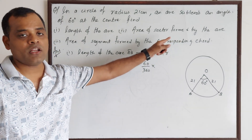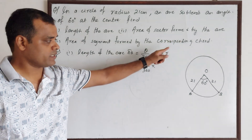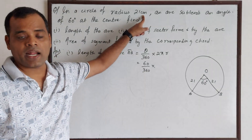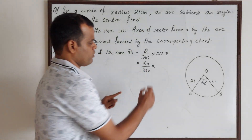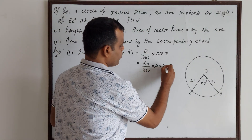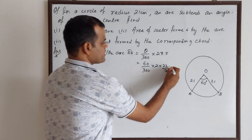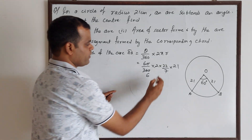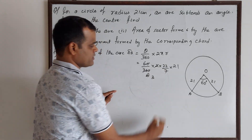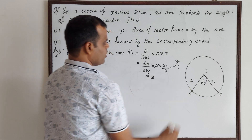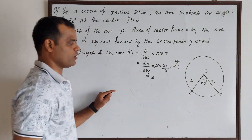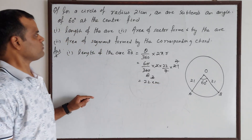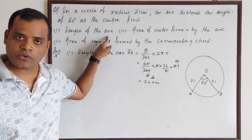We can either take pi as 22/7 or 3.14 depending on the situation. The radius is 21 cm and it is a multiple of 7, so we will use pi as 22/7. So: 60 over 360 into 2 × (22/7) × 21. Simplifying: 60 into 6 is 360, 2 into 3 is 6, 3 into 7 is 21, and 7 cancels out. We get 22 cm. So the length of the arc is 22 cm.